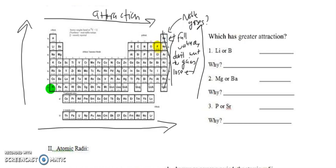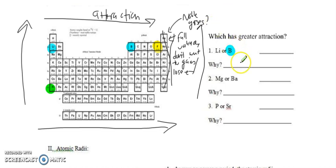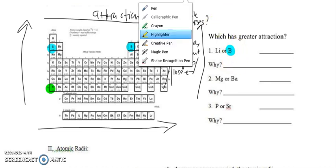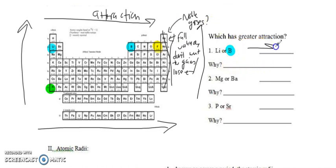Let's compare those two. Here is lithium and here is boron. They're both in the same row — the same horizontal row. Which one's further to the right? Boron. So why is boron the more attractive one? It is further right, so there is more attraction. That means there are more protons to pull on the second energy level of the electron cloud.